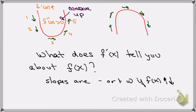Concave up — it means it can hold water. How would I know where it was concave up? What part of the function tells me about the concavity? The second derivative. It's concave up, and the second derivative is greater than zero.